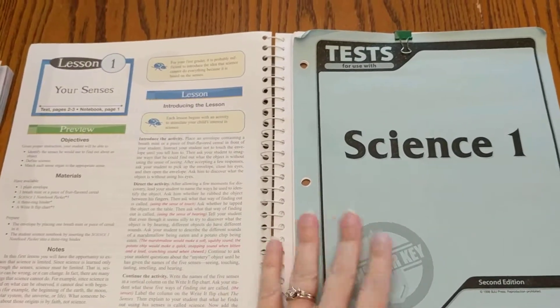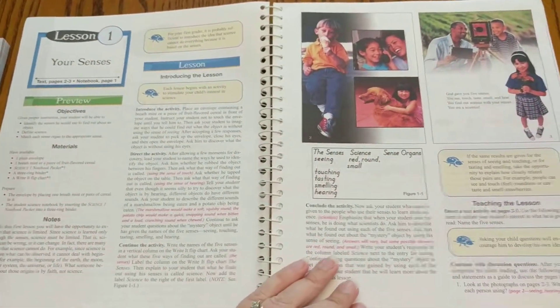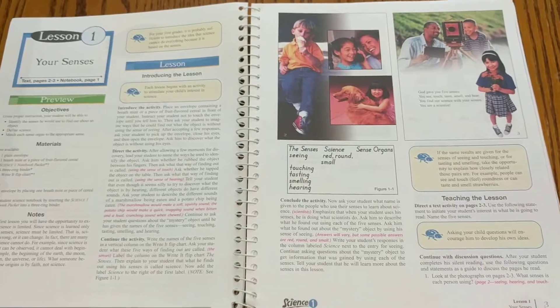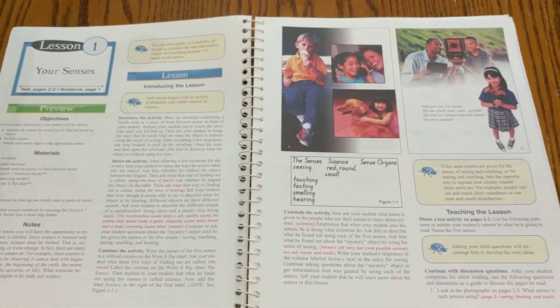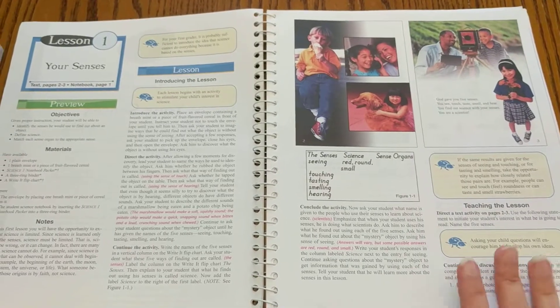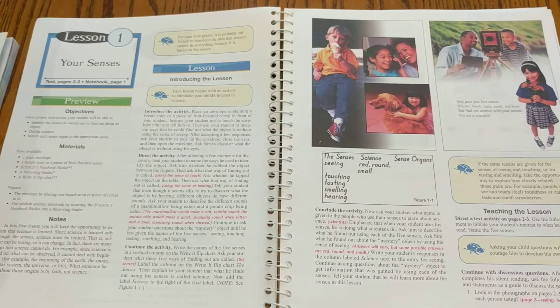There's a teacher's edition, a test packet. This is actually the answer key that I was given, and then there's also an activity manual for doing experiments and different activities and worksheets. I don't have the activity manual because this was given to me, and I didn't purchase the consumables because I'm not going to actually use it.